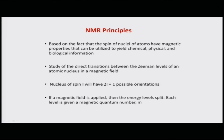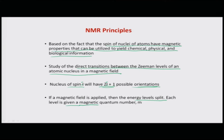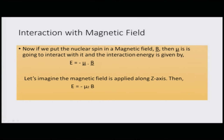NMR principles are based on the fact that spin properties of atomic nuclei can yield chemical, physical, and biological information. We study direct transitions between Zeeman levels of atomic nuclei in a magnetic field; a nucleus of spin I will have 2I+1 possible orientations. When a magnetic field is applied, the energy levels split, each given a magnetic quantum number m. The interaction energy is E = -μ·B; with the field along z, E = -μ_z × B_z.